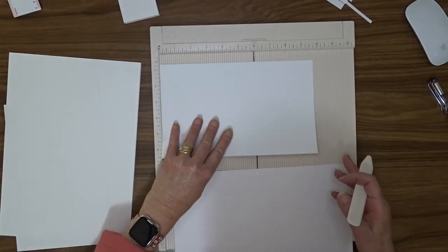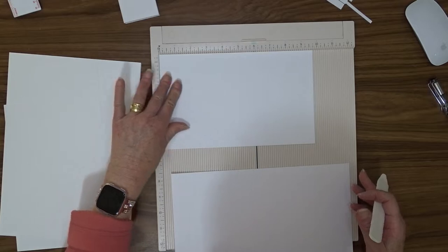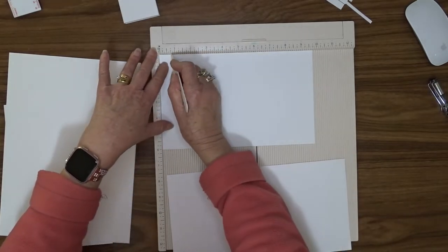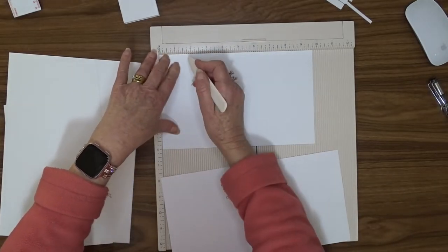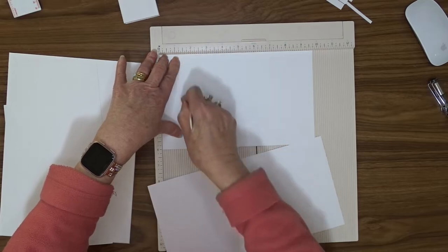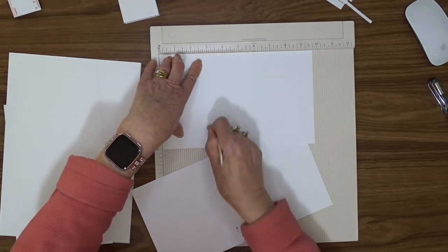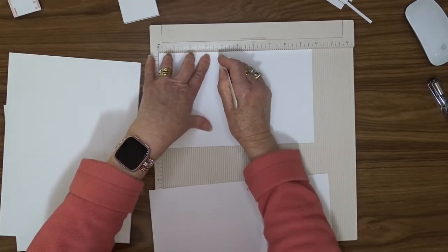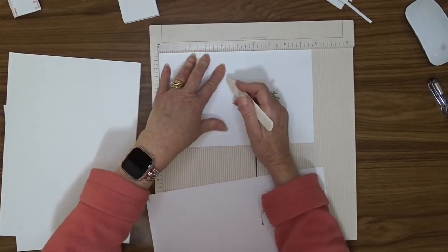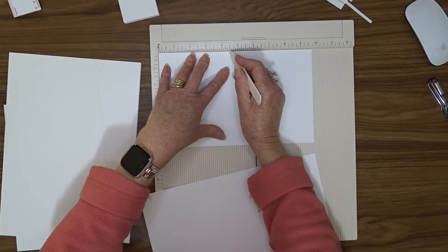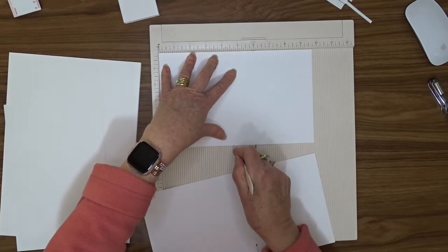For the 9 and a quarter inch piece we're going to do the same thing. We're going to score every 3 quarters of an inch. So 3 quarters of an inch, 1 and a half inches, 2 and a quarter inches, 3 inches, 3 and 3 quarters, 4 and a half and 5 and a quarter. And 5 and a quarter is the final score line.